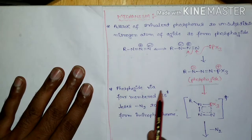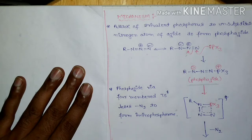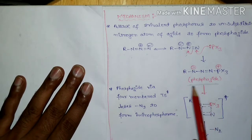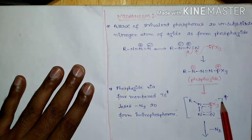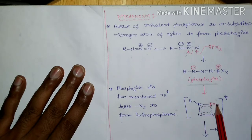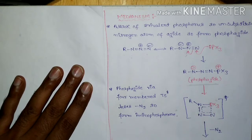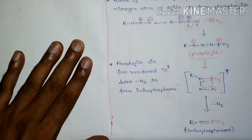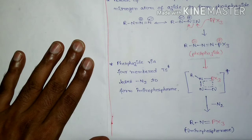This phosphazide, via a four-membered transition state, loses a dinitrogen molecule to form the iminophosphorane. The phosphazide rearranges itself to form a four-membered transition state, and this four-membered transition state loses the dinitrogen molecule to give the iminophosphorane.